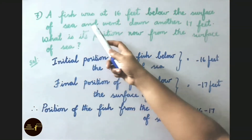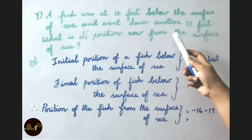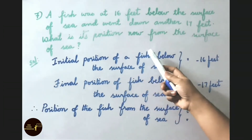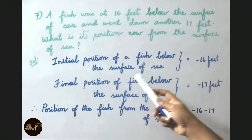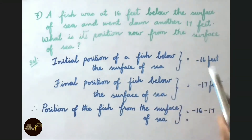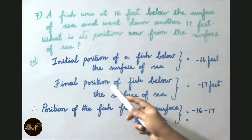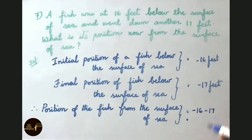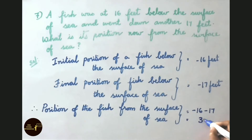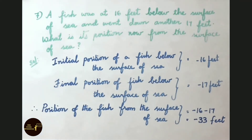See now question number 7. A fish was at 16 feet below the surface of the sea and went down another 17 feet. What is its position from the surface? The initial position of the fish is minus 16 feet. It goes down another 17 feet, so we calculate minus 16 minus 17. Both are minus sign, so we do addition: 16 plus 17 equals 33. Both are minus, so keep the minus sign. The answer is minus 33 feet — that is the position of the fish from the surface of the sea.